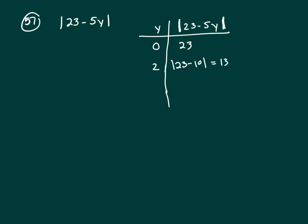So, now let's go up to 4. So, that's going to be 23 minus 20, so absolute value of that, that's going to be 3.